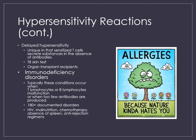Immunodeficiency disorders — immunocompromised individuals are at highest risk for developing infectious diseases. HIV is a big one because it destroys T lymphocytes, crippling the immune system. There are about 180-plus identified immunodeficiency disorders. HIV, malnutrition, and chemotherapy are examples. Also, when we're very young our immune system isn't fully developed, and as we age our immune system starts to decline.